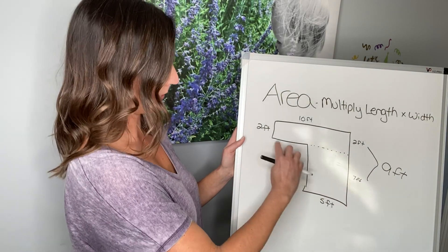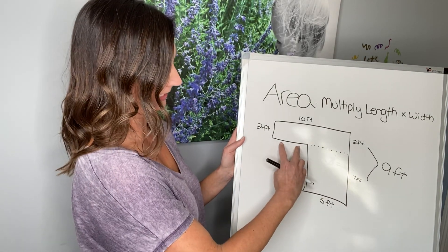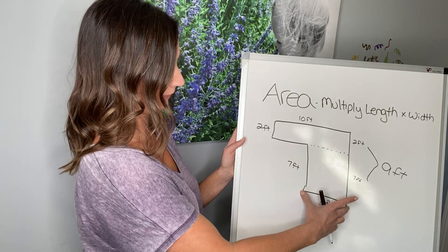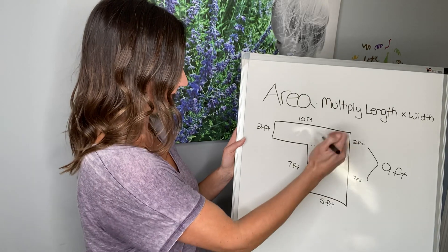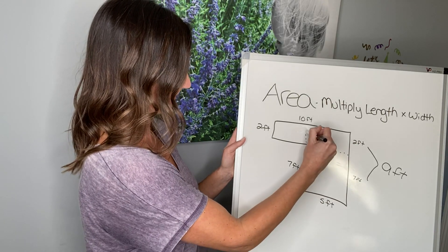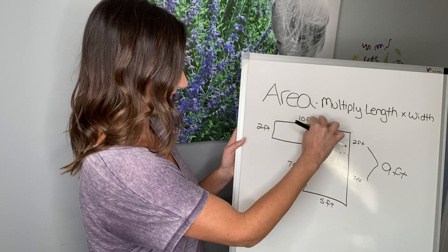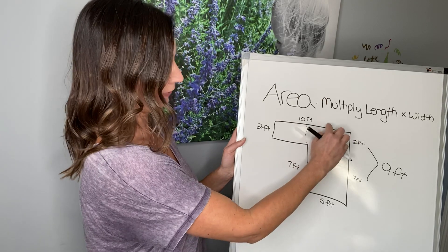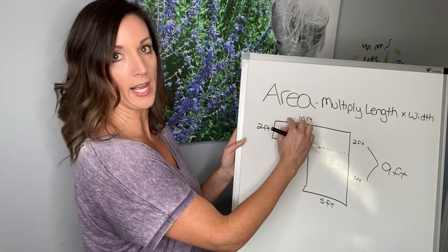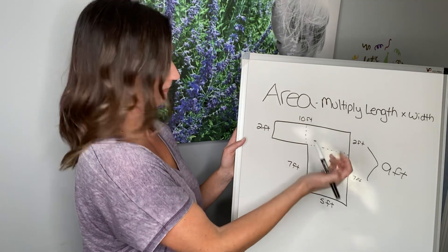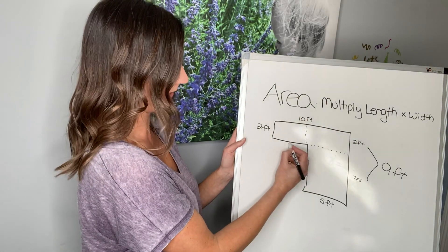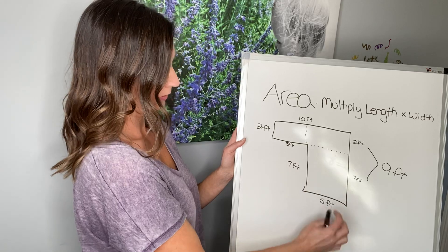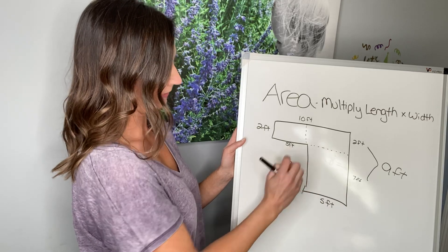And likewise, we can find this missing side length too, because if this is five feet and it goes up, and this is ten, so this is five. Five plus what equals ten? Five feet. So we have five feet and five feet.